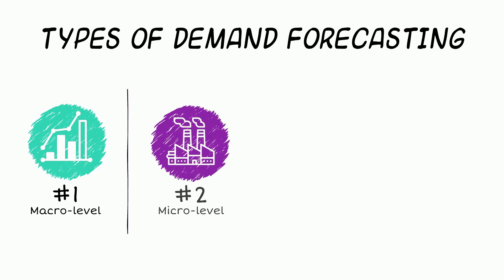Number two is micro level demand forecasting, which can be specific to a particular industry, business, or customer example. An example of this is examining demand for natural deodorant for millennial customers in Chicago.